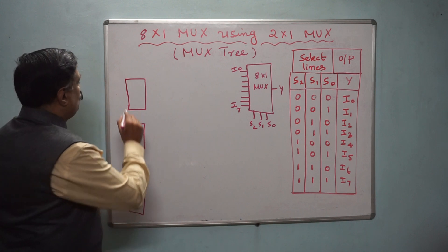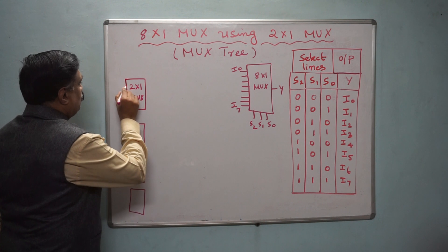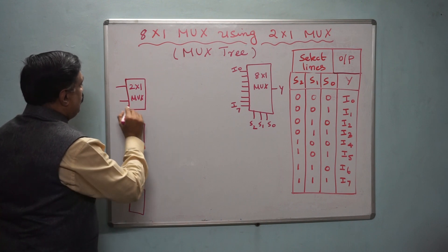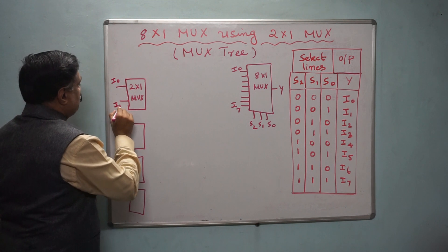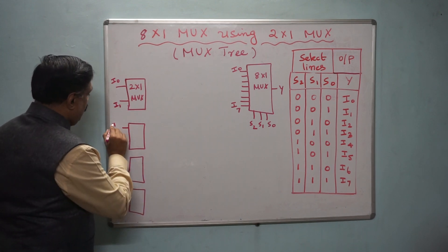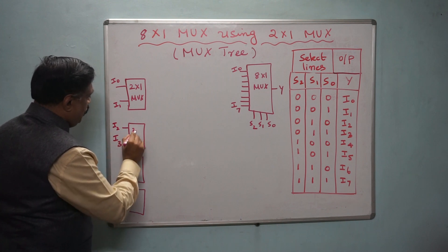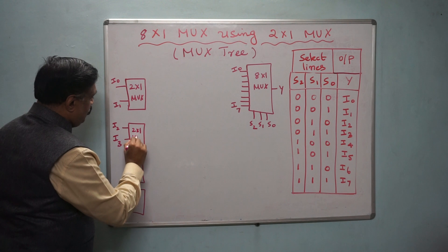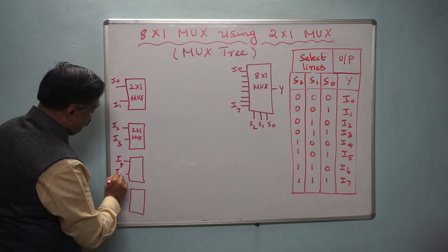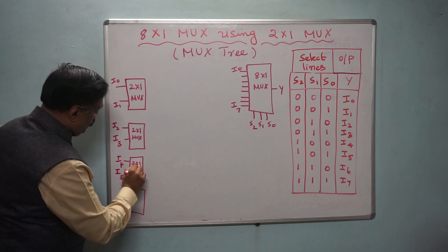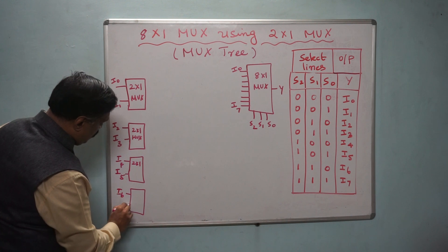Each 2 by 1 MUX has 2 inputs. The first MUX takes i0 and i1, the second takes i2 and i3, the third takes i4 and i5, and the fourth takes i6 and i7.